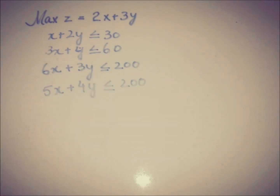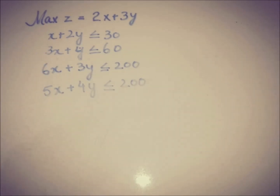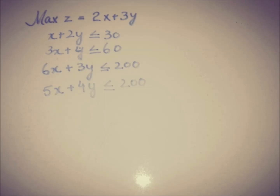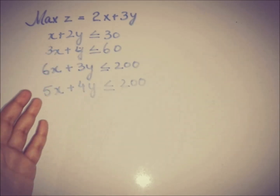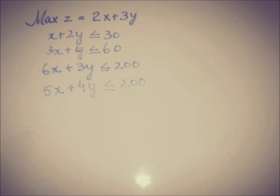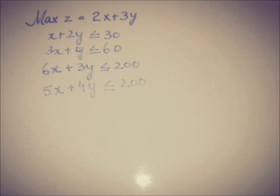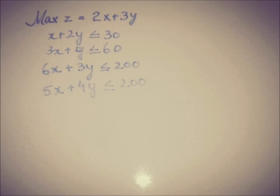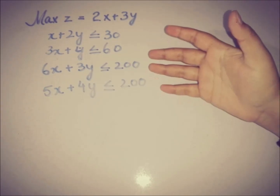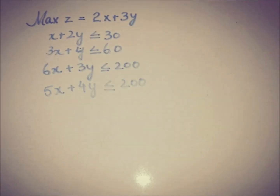Here we are with the same problem that was discussed in the video of the graphical method. I'm taking this problem again so as to make a complete connection between the simplex method and the graphical method. We have the objective to maximize Z = 2x + 3y, with constraints: x + 2y ≤ 30, 3x + y ≤ 60, 6x + 3y ≤ 200, and so on. The right-hand side values 30, 60, 200 are the limits on available resources, and the left-hand side expressions represent usage of those resources by the variables.